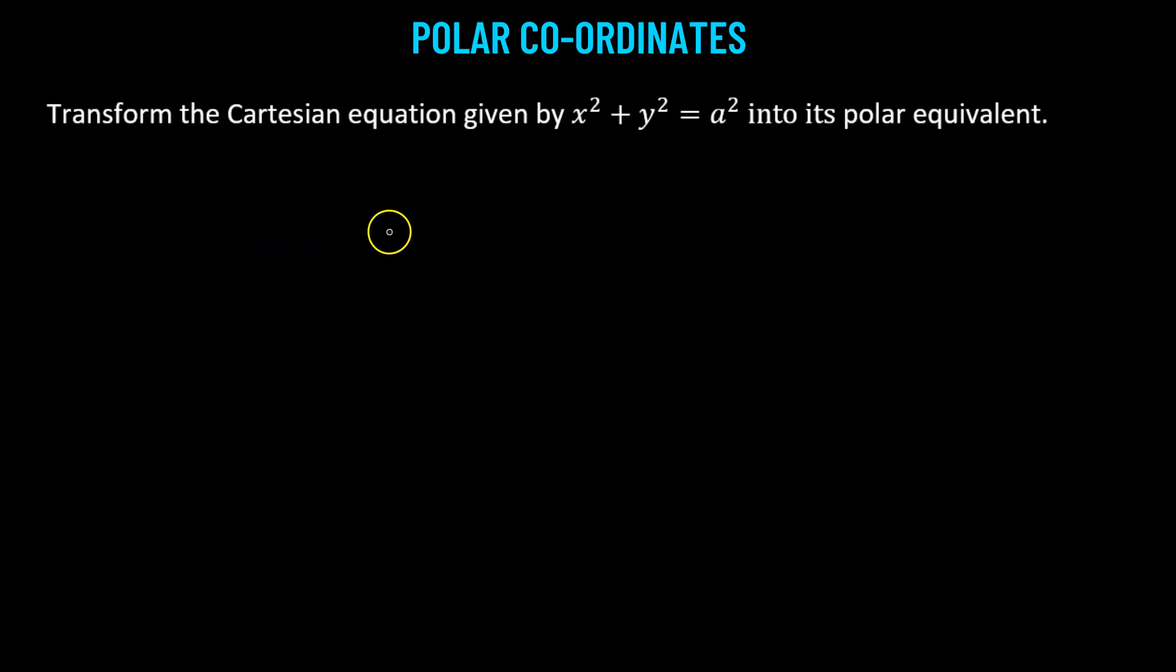We need to transform the Cartesian equation given by x squared plus y squared equals a squared into its polar equivalent. Let us begin.